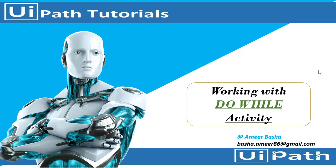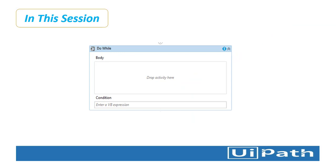Hello everyone. In the previous session we learned about the While activity. In this session we are going to learn about the Do-While activity. Do-While activity enables you to execute a specified part of your automation while a condition is met. When the specified condition is no longer met, the project exits the loop. While and Do-While loops are similar — don't get confused with these two things.